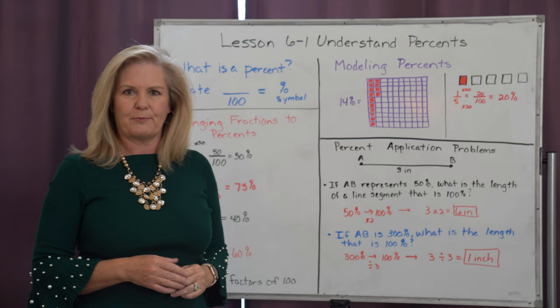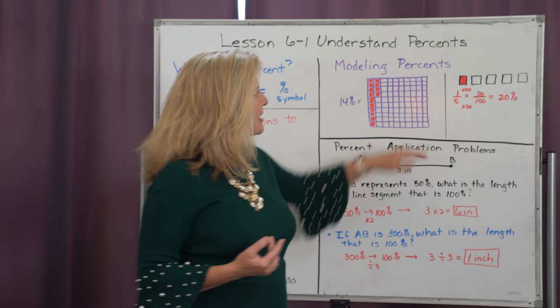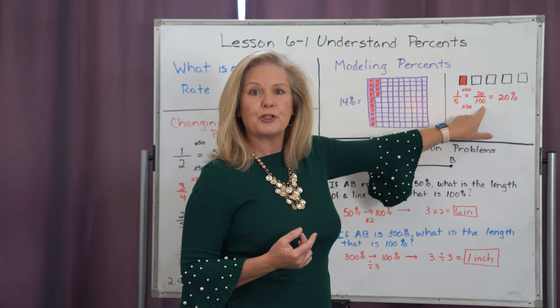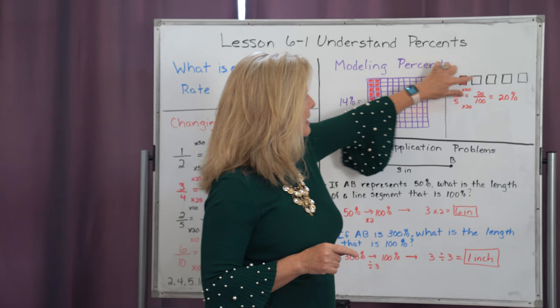Now because we can take our fractions and change them to percents, sometimes our models will be looking like fractions. So here I have one square colored in out of the five. Well, in order to know the percent, I can take that one-fifth and change it into twenty-hundredths by using the same method we used over here, and I know that would then be twenty percent. The other thing I can do is check, because if I go twenty, forty, sixty, eighty, a hundred, I have just the twenty percent colored in.